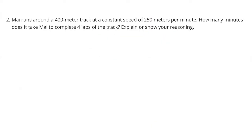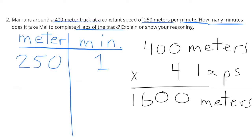Number two: Mia runs around a 400-meter track at a constant speed of 250 meters per minute. How many minutes does it take Mia to complete four laps of the track? Explain or show your reasoning. It's a 400-meter track, so that would be 400 times four, which is 1600 meters.